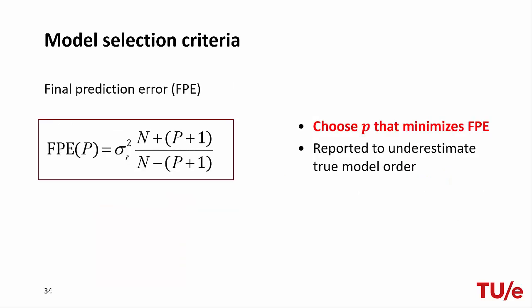When we need a criterion for choosing model order, we can use the Final Prediction Error (FPE), whose formula is given in the slide. Here N represents the data length, P the number of parameters, and σ²_R is the variance of the residuals. The FPE is the product of two components that go in opposite directions as P increases: the residual variance always decreases with increasing model order, but this decrease is penalized by another term in the product which increases with P.